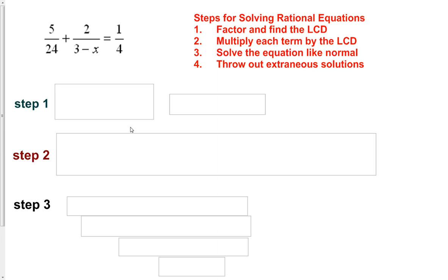In this video we're going to solve rational equations. We go through a four step process. First, factor the denominators of all fractions in our equation. Second, multiply each term by the least common denominator. Third, solve the equation using standard algebra. Fourth, once we get our solutions, make sure there are no extraneous solutions that cause the denominator to go to zero.